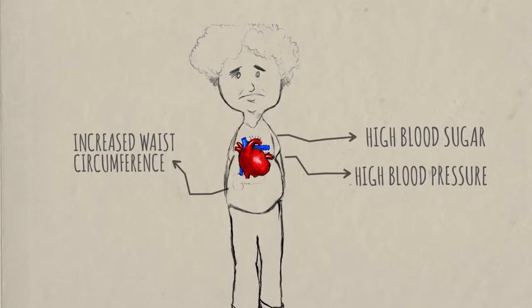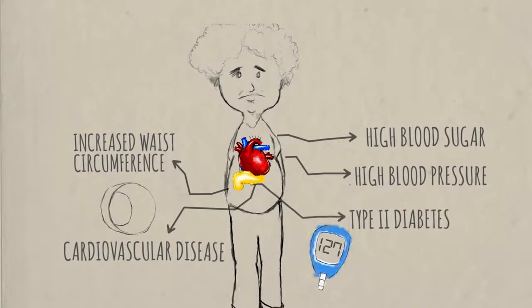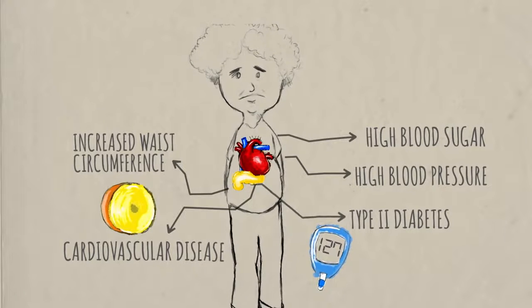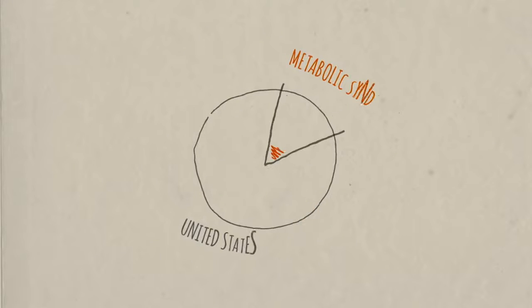It increases the risk of developing conditions like cardiovascular disease and type 2 diabetes, and its prevalence is rapidly increasing all over the world. As much as 32% of the population in the U.S. has metabolic syndrome.